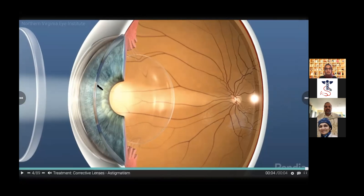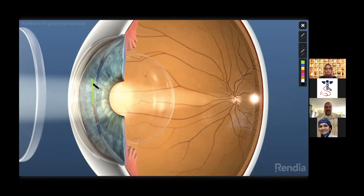Just some basic anatomy: this surface in the front of the eye, the clear window that we look through, is known as the cornea. The cornea has five layers and lots of special properties, some of which we're going to touch upon today, but it's the clear window of the eye through which we see each other's eye color and pupil.